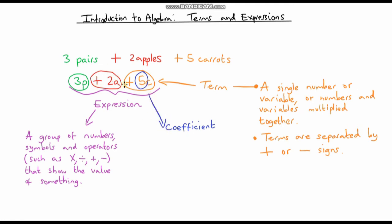So 5 is our coefficient. In this case, our coefficient on this term is 2—we've got 2 apples. And the coefficient on this term is 3.